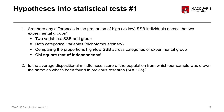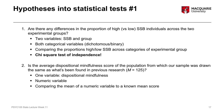Our next methodological check is seeing if the average dispositional mindfulness score of the population from which our sample was drawn is the same as what's been found in previous research. Previous research has found that people generally have an average dispositional mindfulness score of 125. This hypothesis involves one single variable — dispositional mindfulness — and it's a numeric variable. We want to compare the mean of this numeric variable to a known external mean of 125. Because it's a single numeric variable and we're comparing its mean to an external value, a one-sample t-test is the appropriate test.